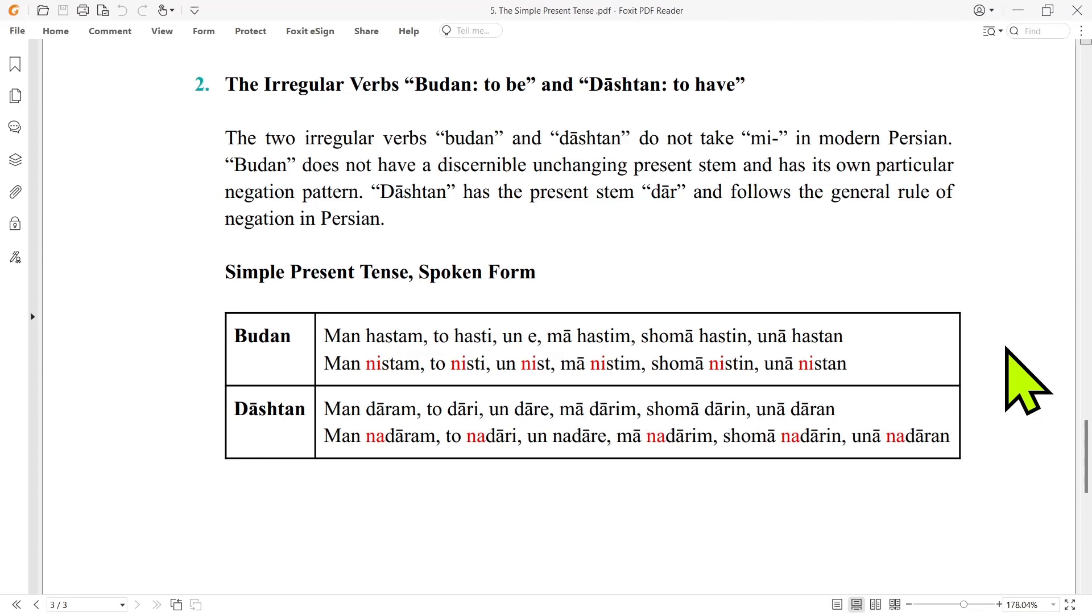And now the irregular verbs budan and dashtan. One of the irregularities with budan and dashtan is that they do not take mi in modern Persian. Budan does not have a discernible unchanging present stem and has its own particular negation pattern. Dashtan has the present stem dar and follows the general rule of negation. Let's review.